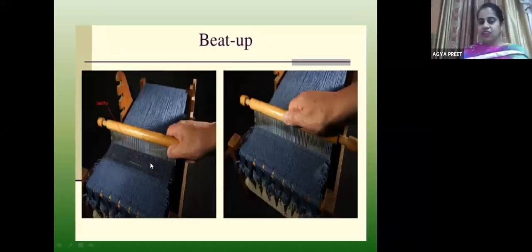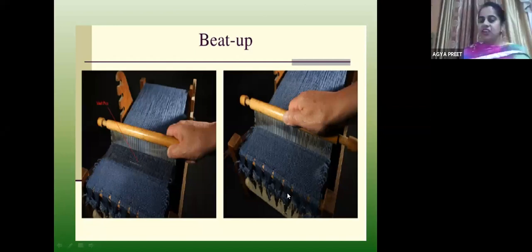Next is beat-up. You have inserted the weft. The last inserted weft is beaten to the cloth fell by the reed. The warp beam comes from one side through the let-off process — the warp yarns are let off — and the cloth is wound onto a roller here, which we call the take-up process.